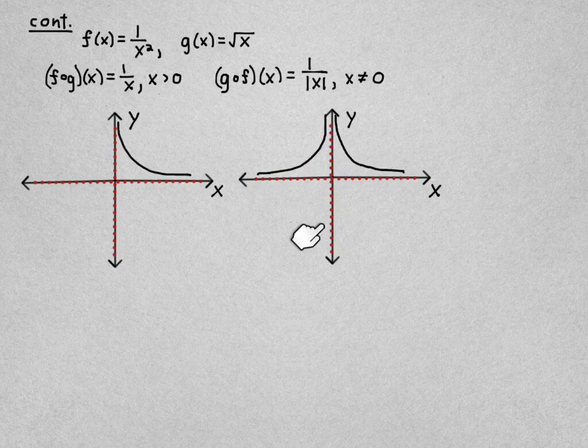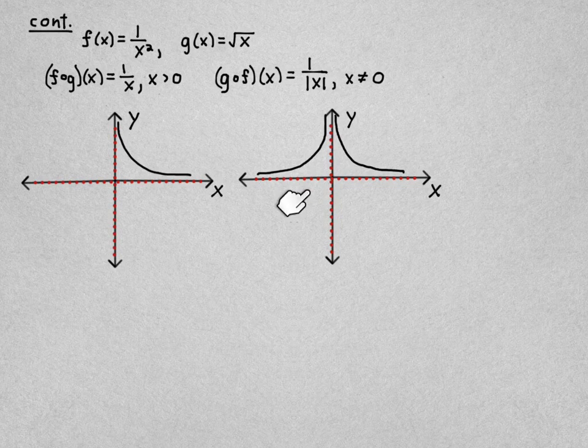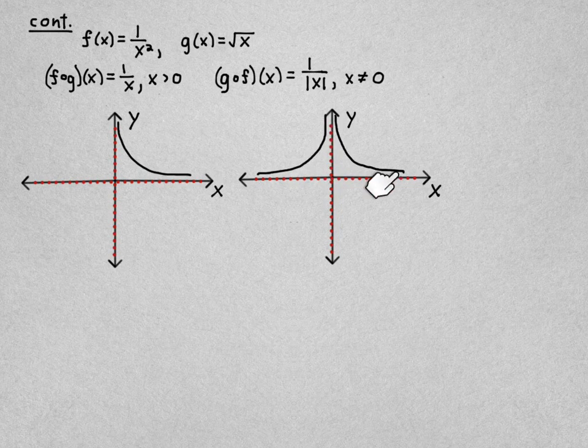Instead of being down here, it's reflected in the x-axis. So it's just this branch is reflected, and this is just the same as this.